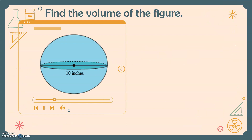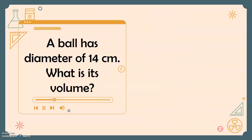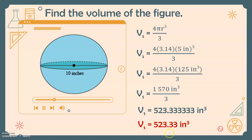Let's find the volume of a sphere with a diameter of 10 inches. To solve for its volume, we use the formula 4πr³ divided by three. Since we're given a diameter, we simply divide it by two, so our radius is five inches. Substituting the given information, we'll have four times 3.14 times five inches cubed divided by three. Five inches cubed is equal to 125 cubic inches. The result, already rounded to the nearest hundredths, accounts for the repeating decimal.